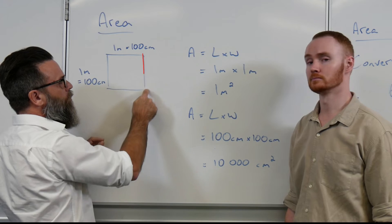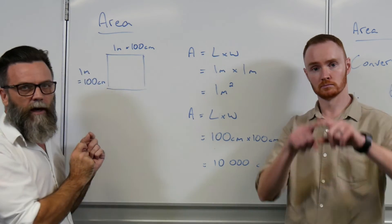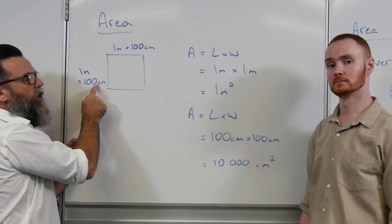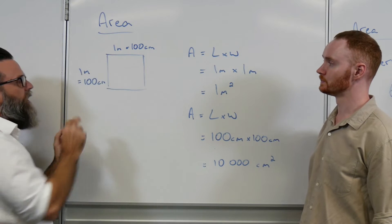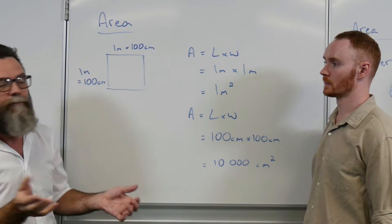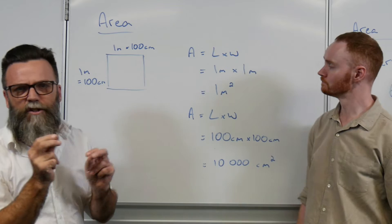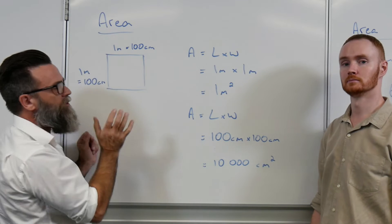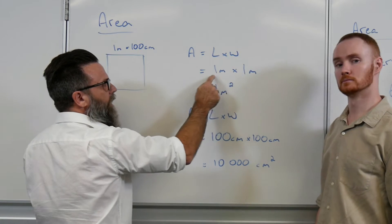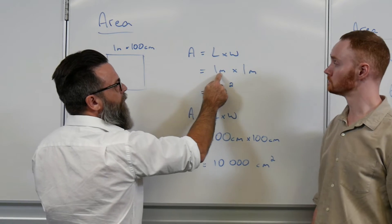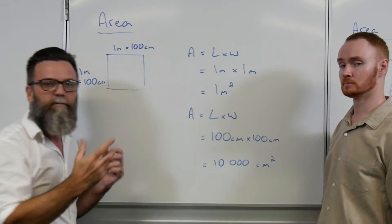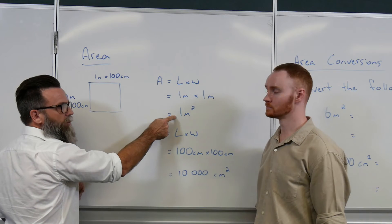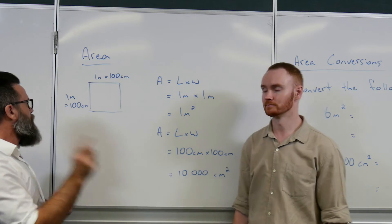If we've got a one meter by one meter square, and I've got one meter and one meter there, you could also draw that up as 100 centimeters times 100 centimeters because the length and the width would both be 100 centimeters, which equals one meter. Then what I'm going to do is I'm actually going to work out the area of each of those shapes. Now length times width or side times side for a square.